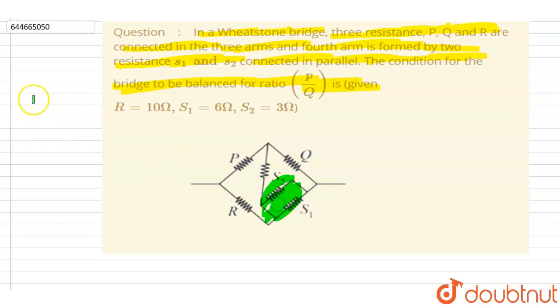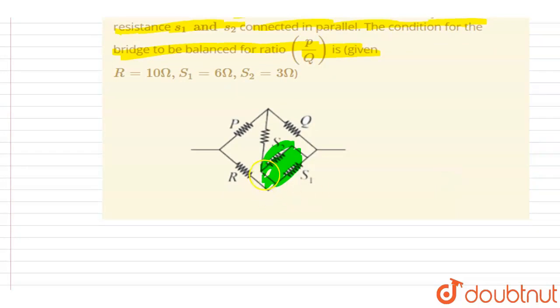They are in parallel, so let us replace these two resistors by a single resistor. Since they are in parallel, you can see the potential difference across them is the same. So I can write down S equals S1 times S2 divided by S1 plus S2. So it will be 6 times 3 divided by 6 plus 3.